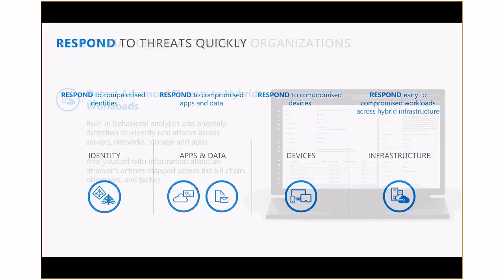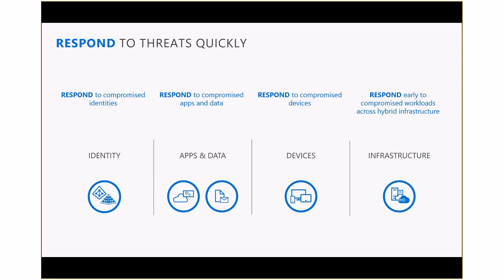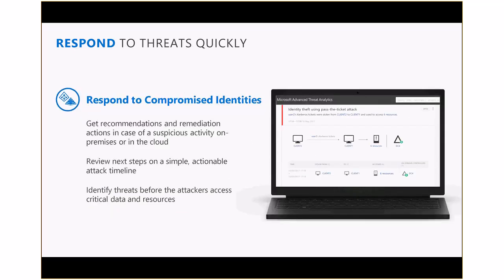That brings us to the respond section on threat protection. We'll go through a series of slides to see how the different Microsoft solutions fit into the threat protection respond phase. The first, once again, is Advanced Threat Analytics and Azure Advanced Threat Protection. From a respond perspective, we give you a simple attack timeline that you can quickly review, along with lots of recommendations through these tools that you can perform to remediate the threat that was executed in your environment. ATA and ATP will help you significantly in responding to threats executed against the identity vector.